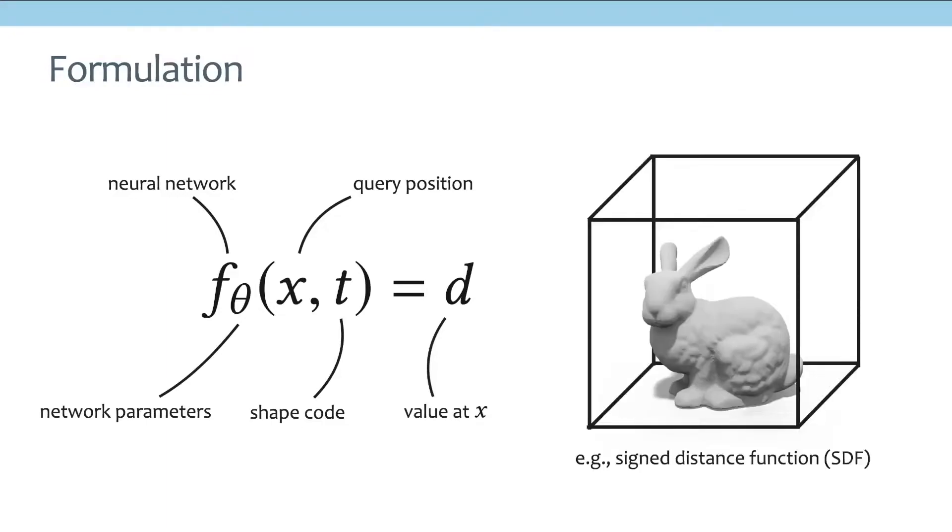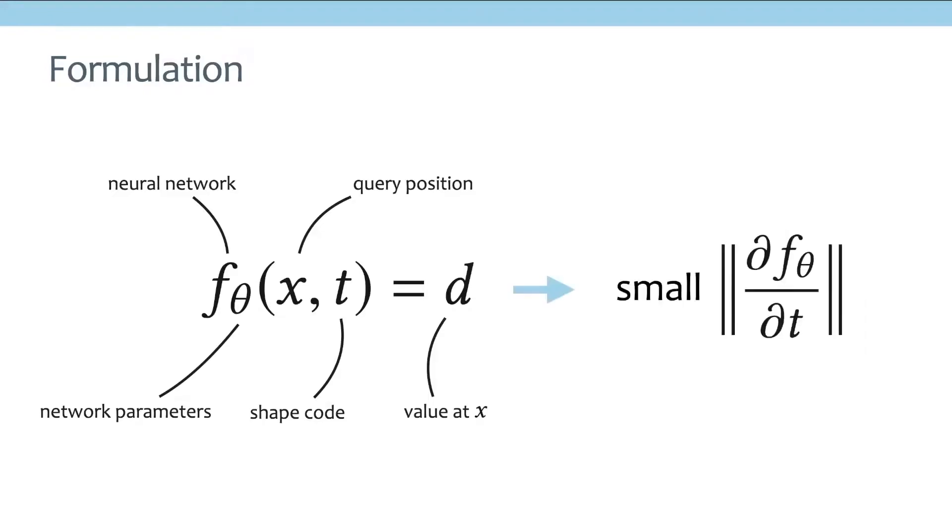For example, if we focus on learning signed distance function, then x will be a query location in 3D, and d will be the distance from this point x to the closest point on the surface. And the goal of our method is to make sure that the derivative of f with respect to t is small. In other words, a small change in the latent code of the shape is not going to make a huge change in the output of the neural network.